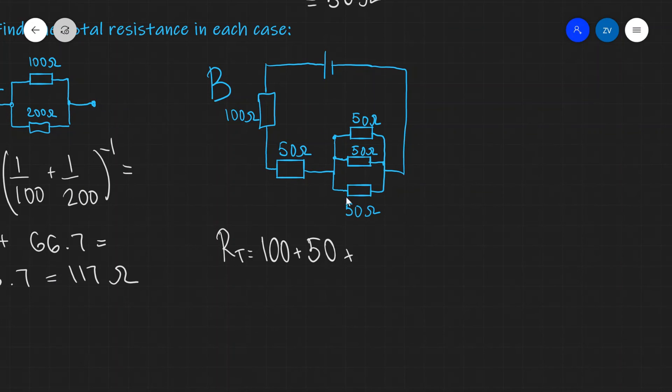So our total will be equal to 100 plus 50 ohms plus, I'm going to need to find the total for just the parallel branch. So this will essentially be equal to 1 over 50 plus 1 over 50 plus 1 over 50. Then don't forget to raise this to the power of minus 1 because this is what our formula says. And if we were to add those up we are going to get 166.7 and let's just say this is equal to 167 ohms.